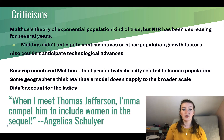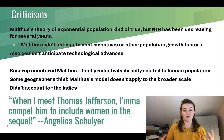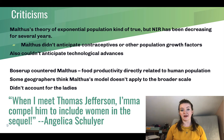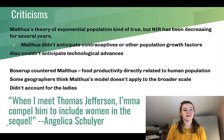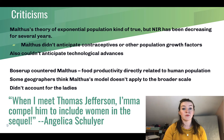Boserup argued that food productivity is directly related to human population — the more humans there are, the more food they will produce, because you have more hands and minds working. Some geographers think Malthus's model doesn't apply at the global scale, only at smaller local scales. Finally, Malthus did not account for women in the workforce, particularly in agriculture, where they are absolutely essential in many cultures.